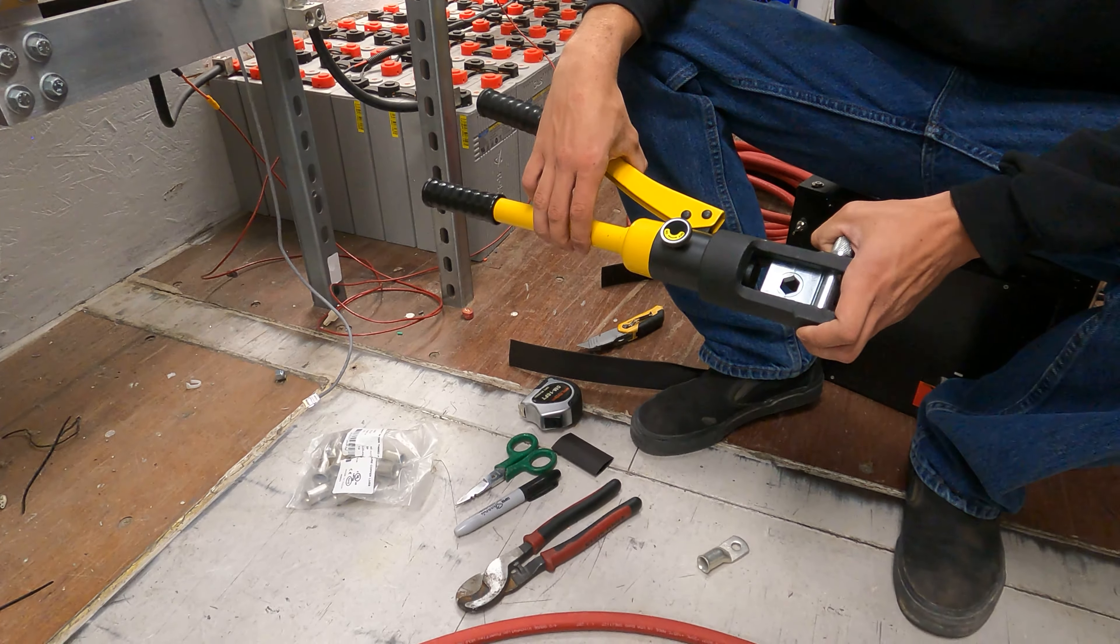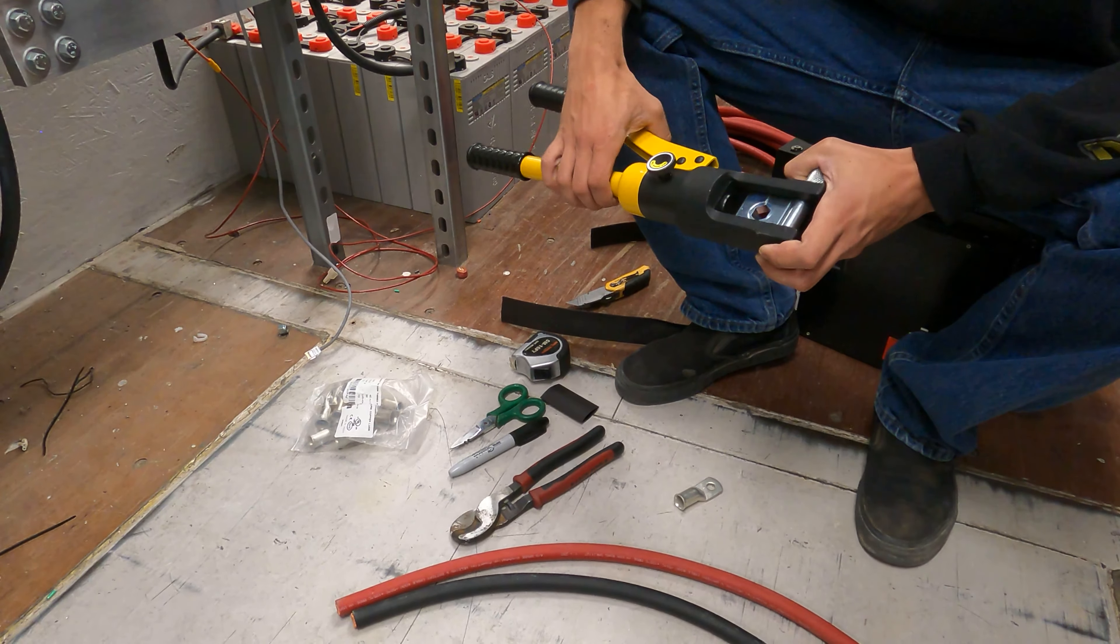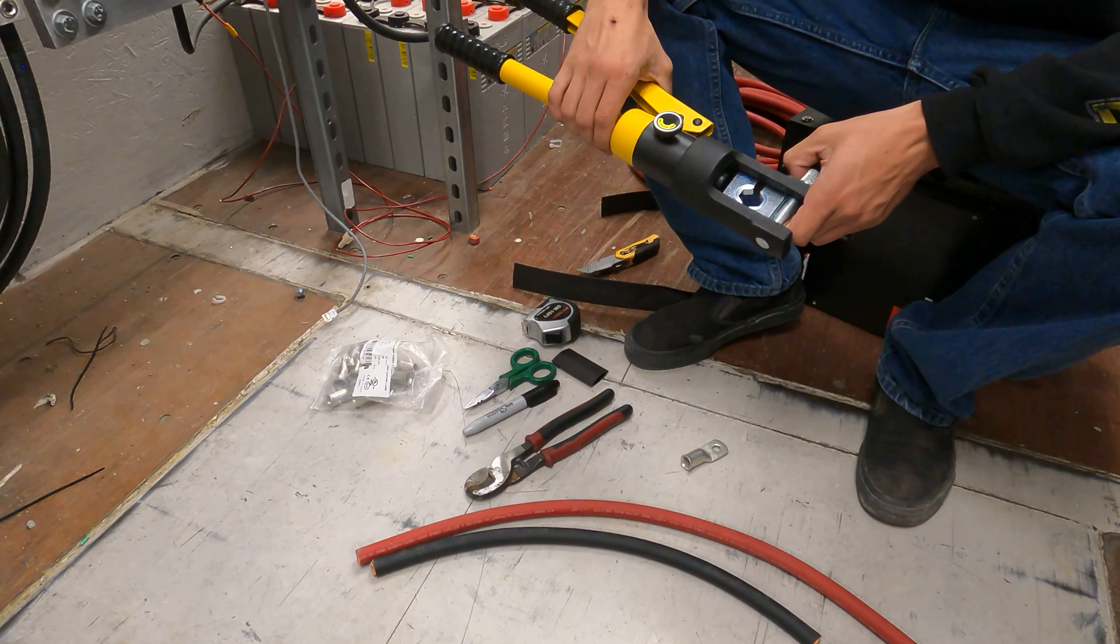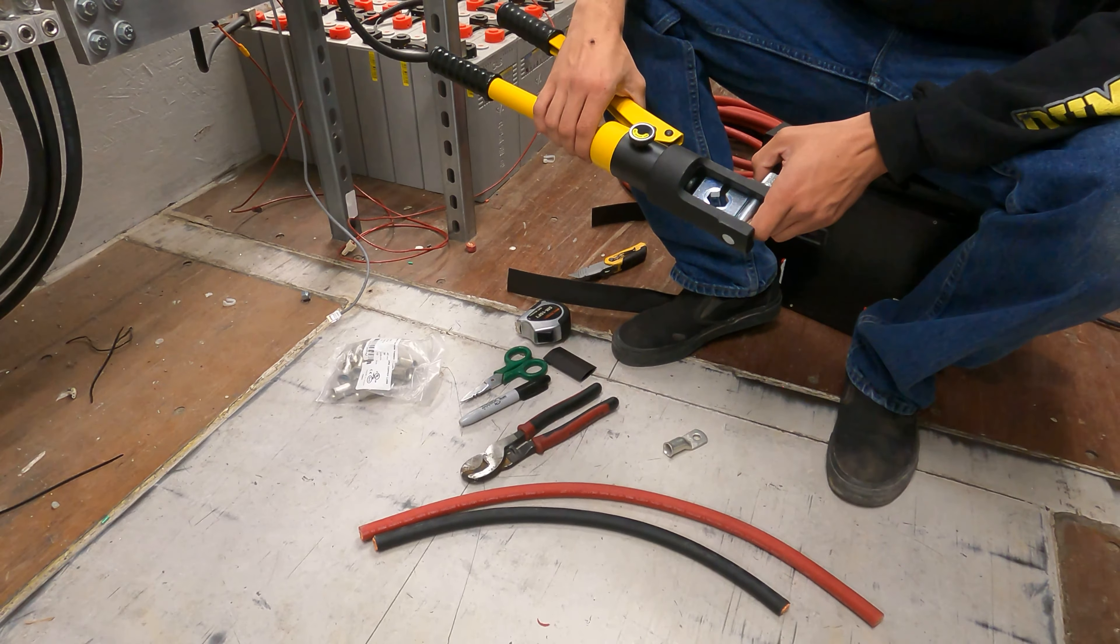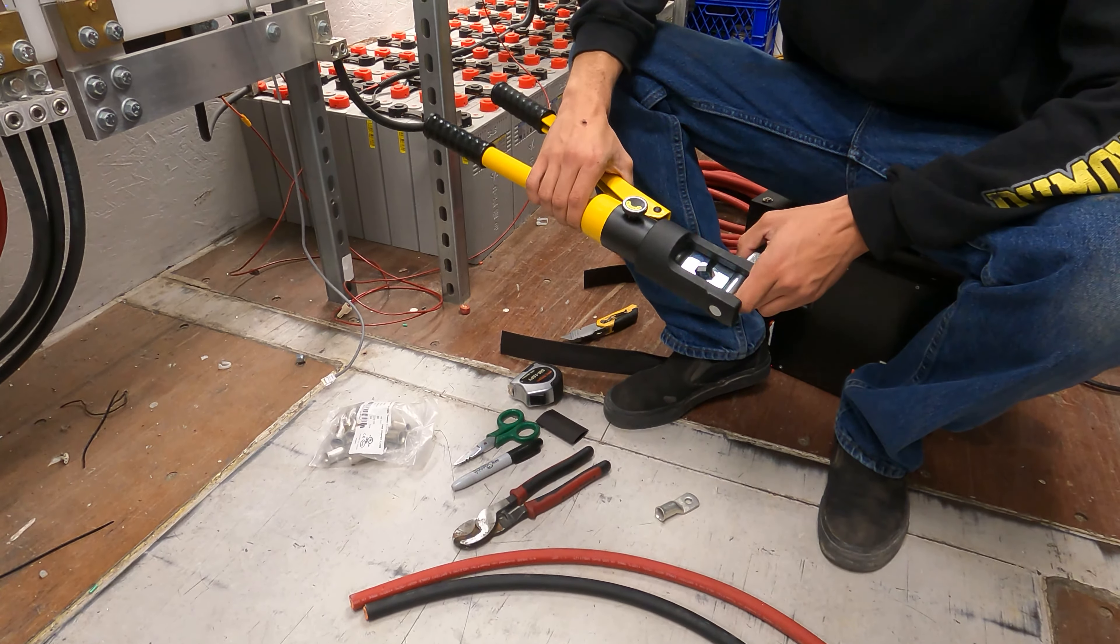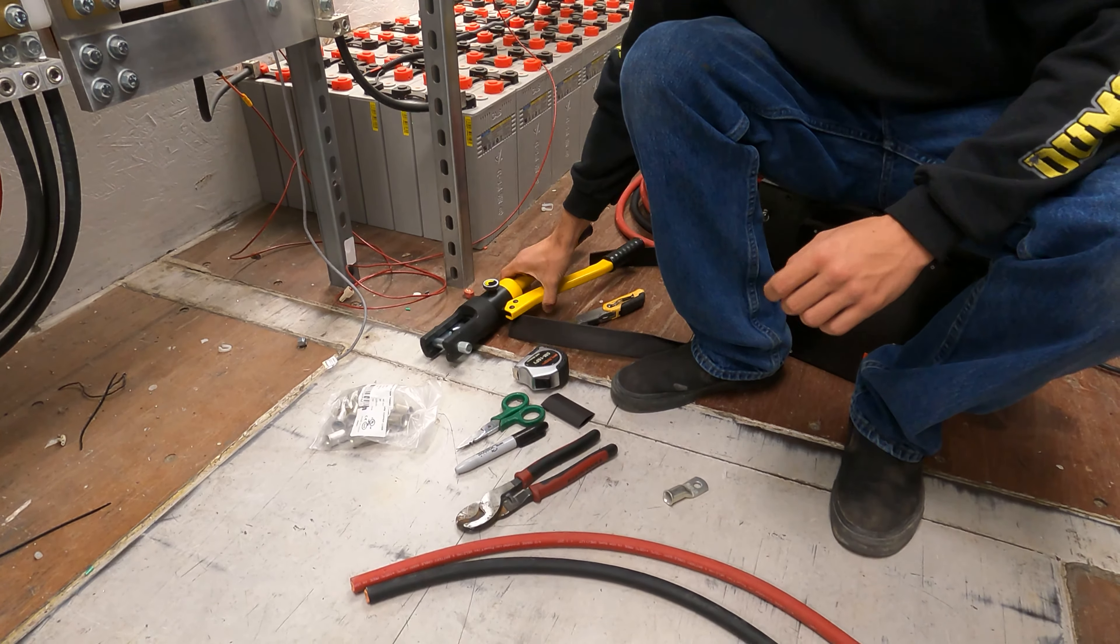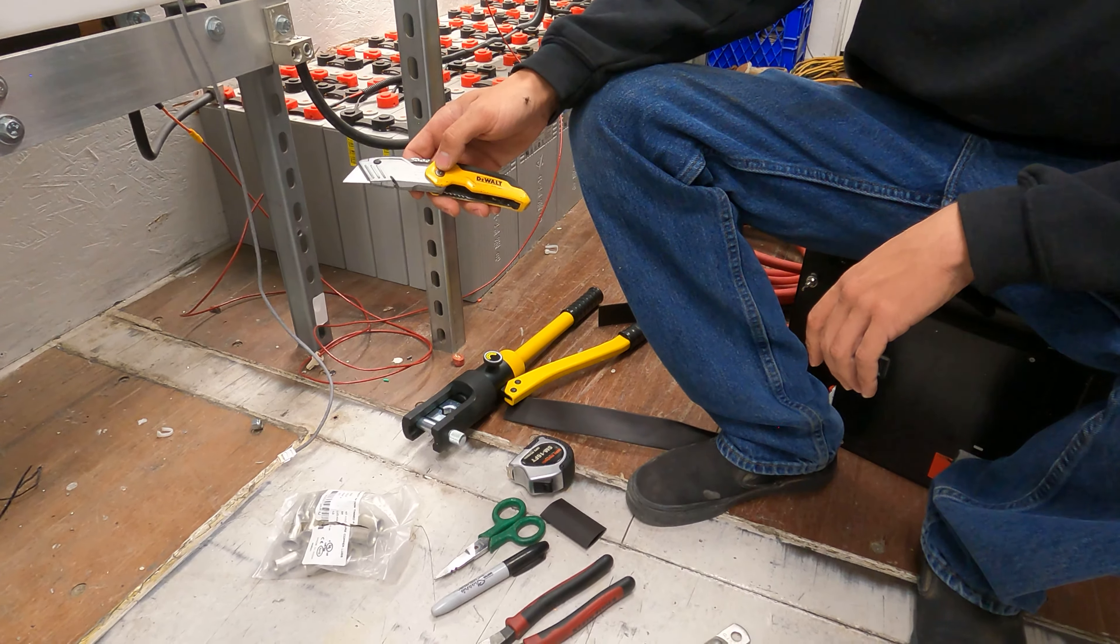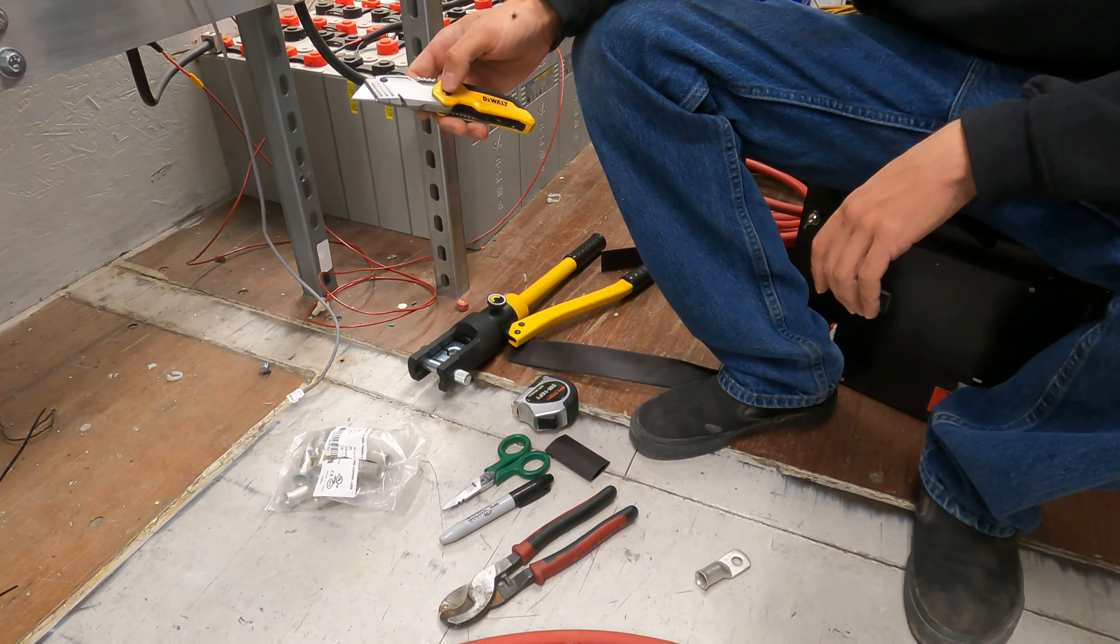Now we're going to crimp these cables, and later in the video, we're actually going to cut through one of the crimps and see how well this tool actually is doing. So if you're interested in buying a battery crimper, I'll throw the link in the description after we see how well this does. Other than that, I have a knife that's nice and sharp, and this is what I'm going to be using to cut through the insulation.